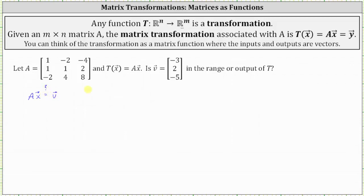So we're trying to answer the question: matrix A times an unknown vector x equals vector v. So we'll set this up. Again, we have matrix A times the unknown vector x equals the vector in the range, which is the image, the vector negative three, two, negative five.